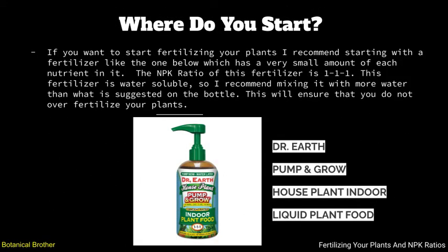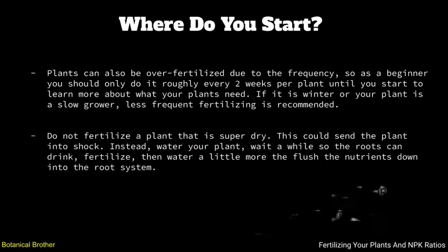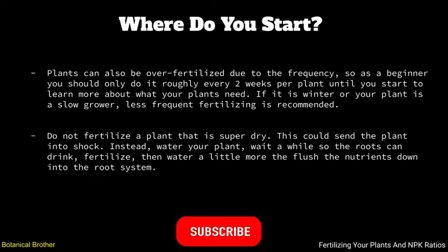So where do you start? If you want to start fertilizing your plants, I recommend starting with a fertilizer like the one below which has a very small amount of each nutrient in it. The NPK ratio of this fertilizer is 1-1-1, meaning it has 1% nitrogen, 1% phosphorus, and 1% potassium. This fertilizer is water soluble, so I recommend mixing it with more water than what is suggested on the bottle — this will ensure that you do not over fertilize your plants. Plants can also be over fertilized due to frequency, so as a beginner you should fertilize only roughly every two weeks until you start to learn more about what your plants need.